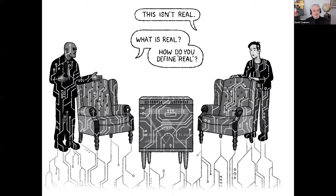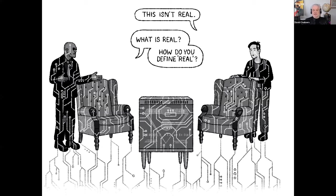This raises deep philosophical questions like 'What is real?' — questions actually raised in the Matrix when Neo says 'this isn't real' and Morpheus replies 'what is real, how do you define real?' I would argue that in all the key senses of reality in which physical objects are real, digital objects can be perfectly real too, and they needn't be illusions.